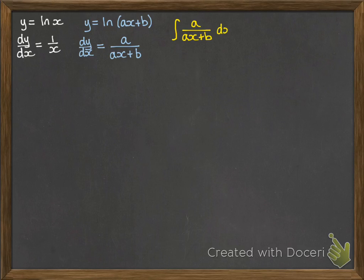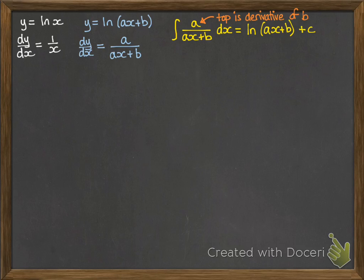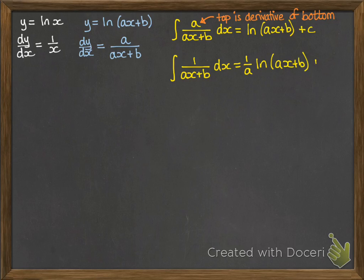So putting that in reverse, the way to recognise these integrals is that the top of your fraction is the derivative of the bottom. If you've got that happening straight away, you can just go straight to your answer being ln of the bottom. And then if you've got 1 at the top, you take out that factor of a, so it would be 1 over a times ln of ax plus b, plus your constant.